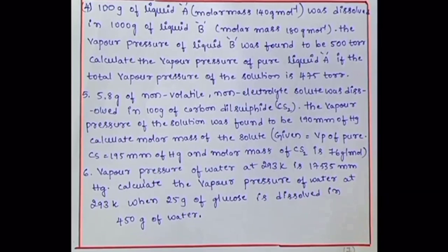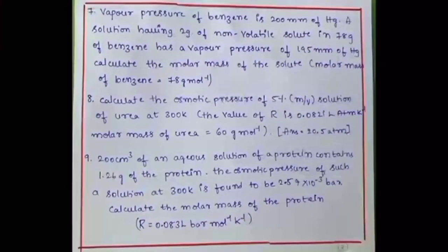5.8 gram of non-volatile non-electrolyte solute was dissolved in 100 gram of carbon disulfide. The vapor pressure of the solution was found to be 190 mm of Hg. Calculate the molar mass of the solute. Vapor pressure of water at 293 kelvin is 17.535 mm Hg. Calculate the vapor pressure of water at 293 kelvin when 25 gram of glucose is dissolved in 450 gram of water. Vapor pressure of benzene is 200 mm of Hg. A solution having 2 gram of non-volatile solute in 78 gram of benzene has a vapor pressure of 195 mm of Hg. Calculate the molar mass.